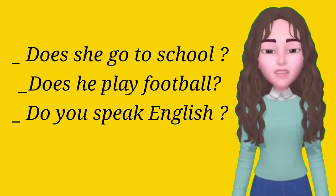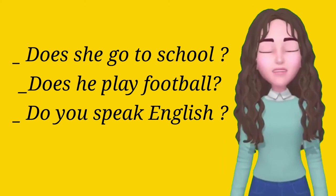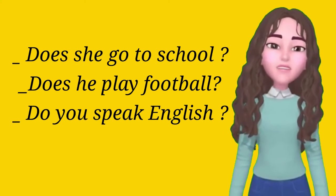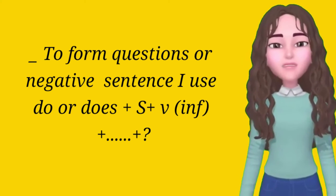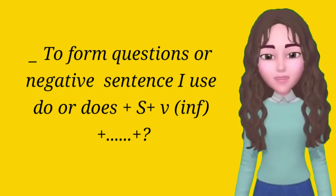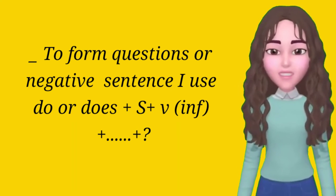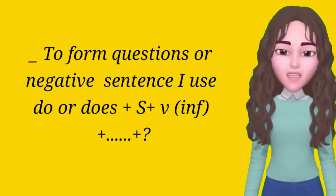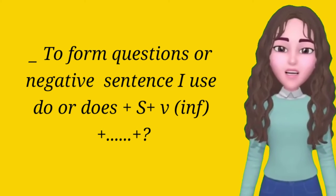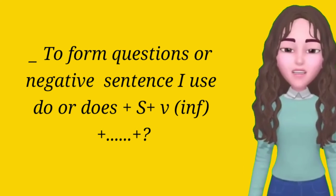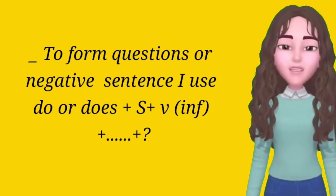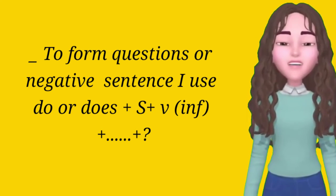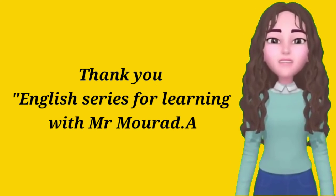Let's read example three: does she go to school? Does he play football? Do you speak English? To form questions in the present simple, use do or does plus subject plus verb infinitive plus the rest of the sentence plus a question mark.